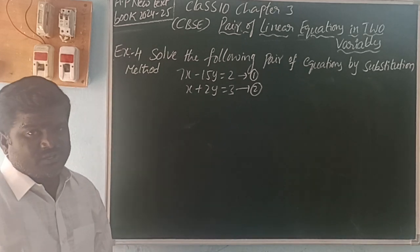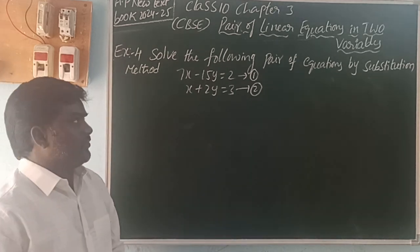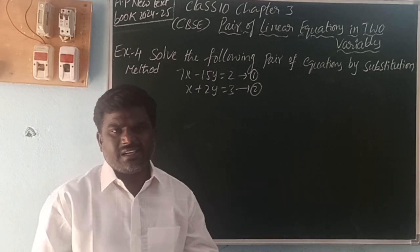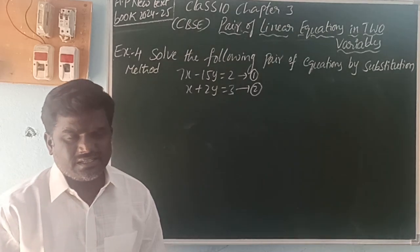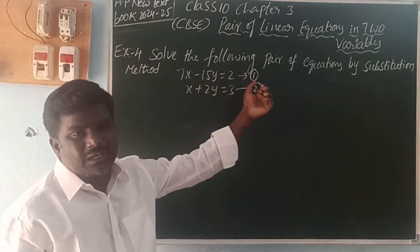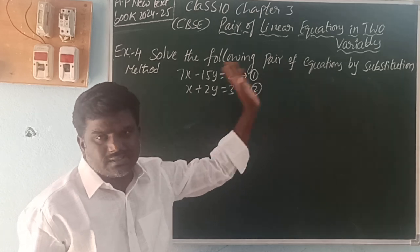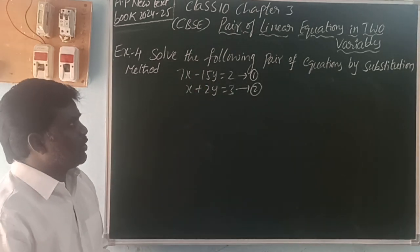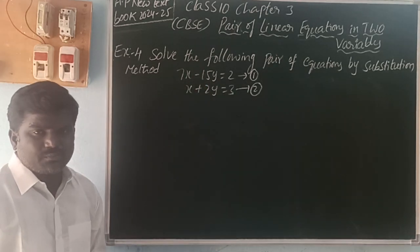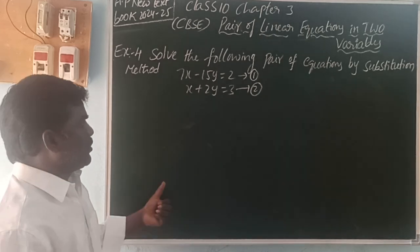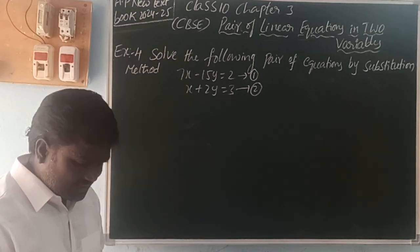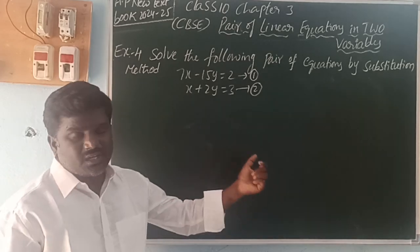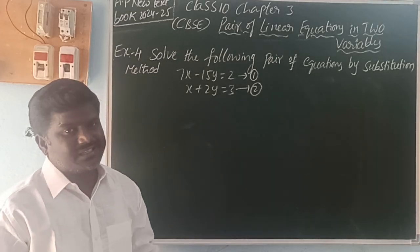Pair of linear equations in two variables. Linear equation means what? The equation of degree 1 is called a linear equation. Pair means 2. In that equation, there are two variables. To solve the pair of equations, there are three methods.